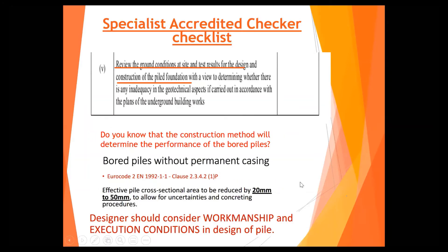Now next - review the ground condition. Do you know that the construction method will determine the soil profile in the EC2? We don't ever leave permanent casing in unless for certain special reasons. Even for bonding we don't use it - it's too expensive. The reason why we need to reduce the diameter is because of the soil deformation. I have not even talked about how we do performance checks on the pile - that will probably be in my third lecture.